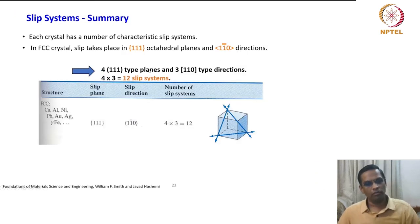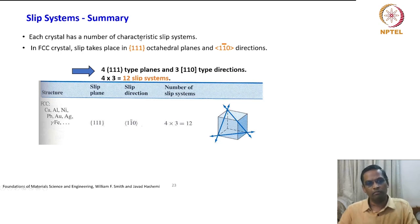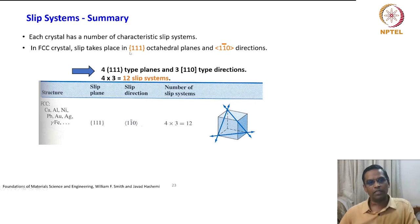Now we will go a little more into the slip system. Each crystal has a number of characteristic slip systems. For FCC, we have already seen that slip takes place on {111} octahedral planes in the ⟨1 1̄ 0⟩ directions.